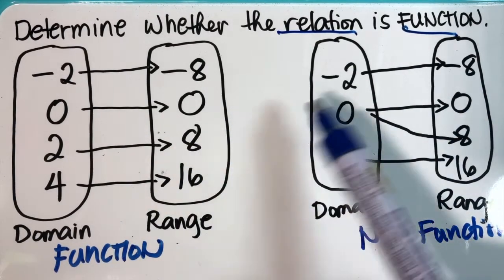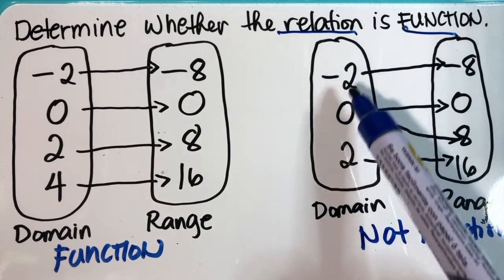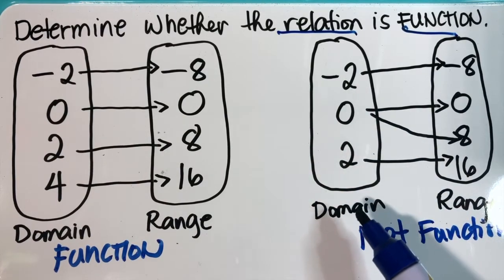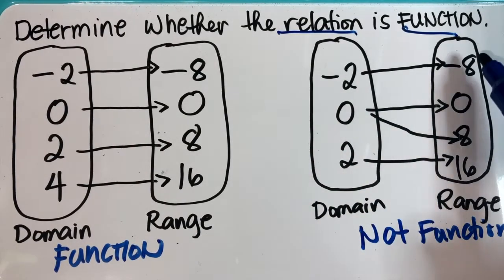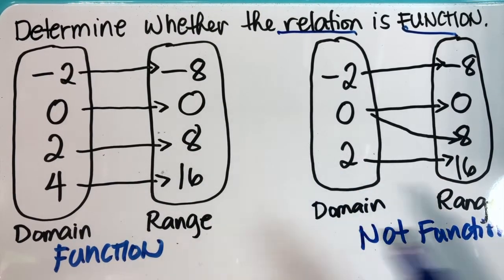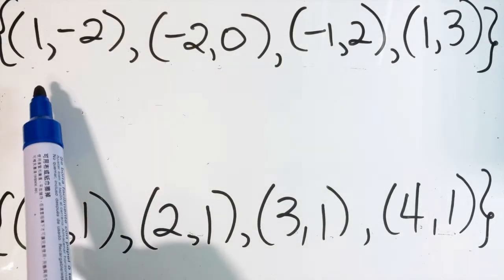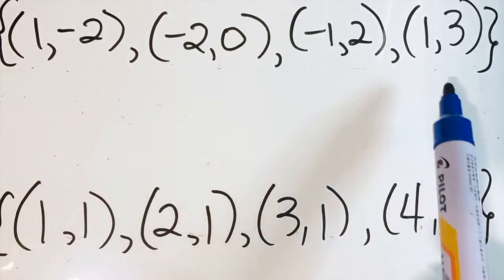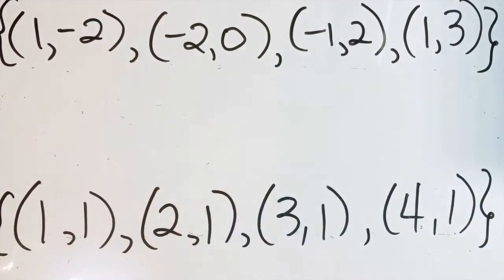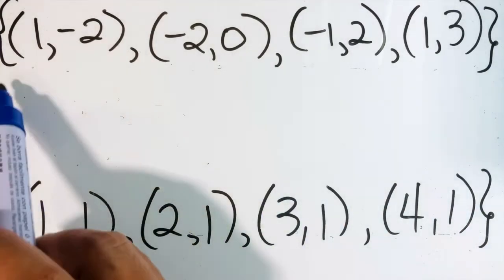So let us define a relation that is a function. A relation is a function when each element of the domain is paired with exactly one element of the range, or no values of x are repeated. Let's take a look at this relation — do you think this is a function? Let us check.